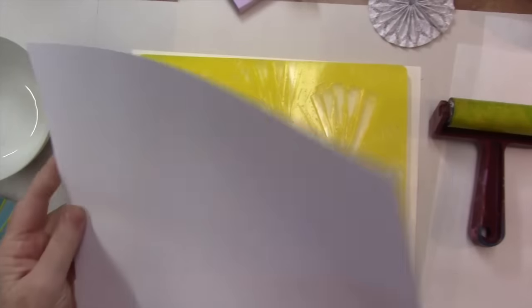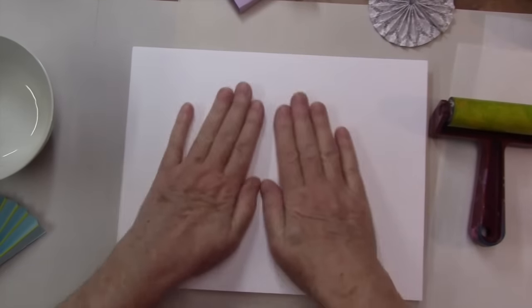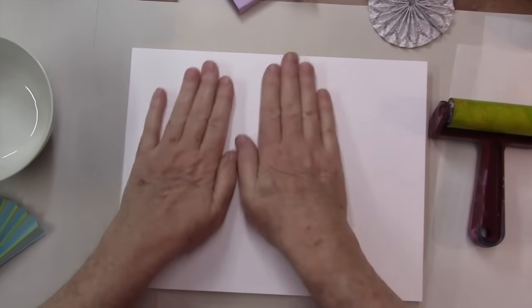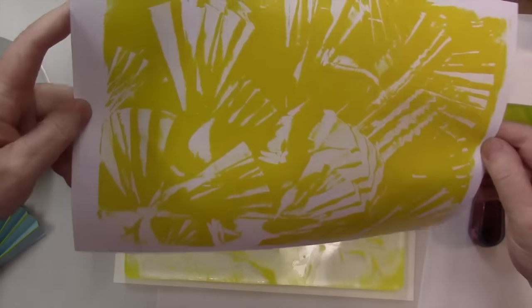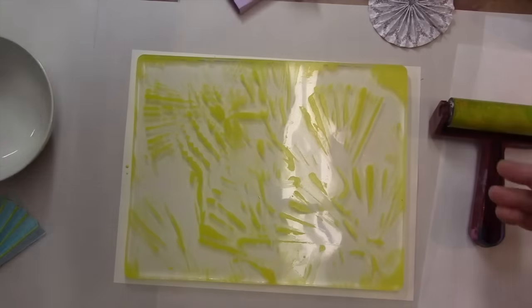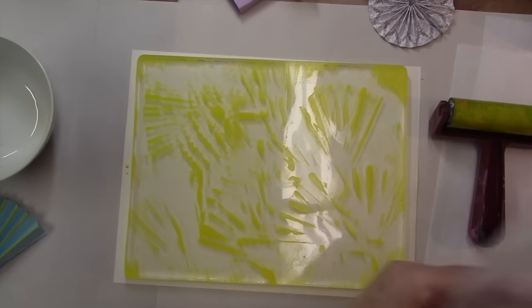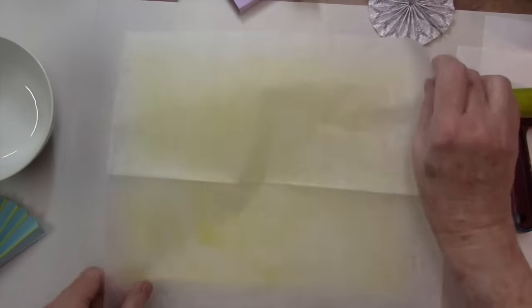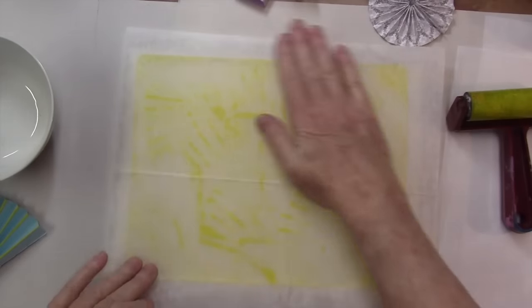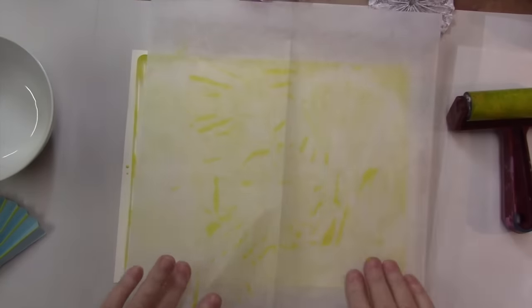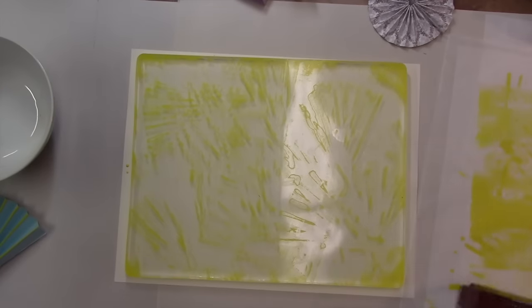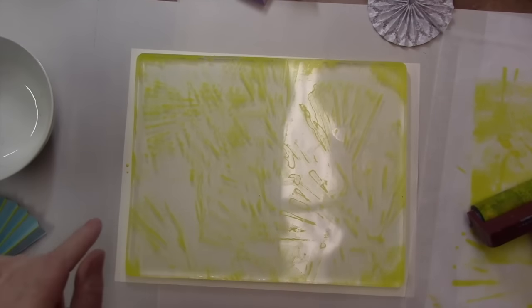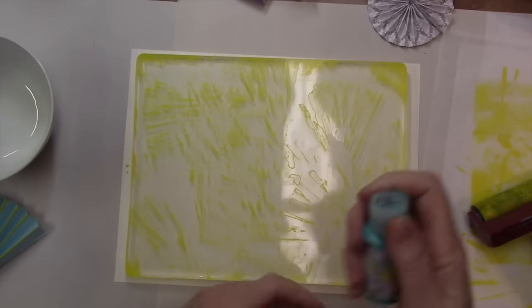It's best to start with printmaking by working from light to dark. Once those marks are made, just lay the paper on top and pull your first print. You can see there's plenty of paint left over, and I'm using some deli paper to pull another print and pretty much clean my block off.